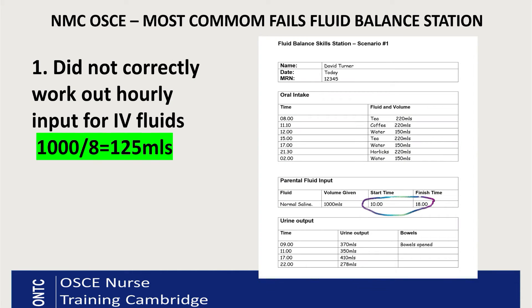The first common fail is not correctly working out the hourly input for IV fluids. You can't put 1000ml on your fluid balance chart in one hour — the patient will never have 1000ml in one hour. You need to work out the hourly intake. If the bag started at 10:00 and finished at 18:00, that's eight hours, so you divide 1000 by 8, giving you 125ml per hour. Make sure you count the hours correctly. They do give you a calculator, so use it.